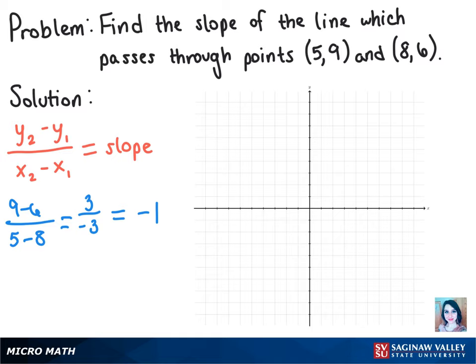Now we can graph these points. So we're going to move to the right on the x-axis 5 units, and then up 9.